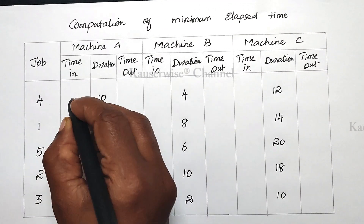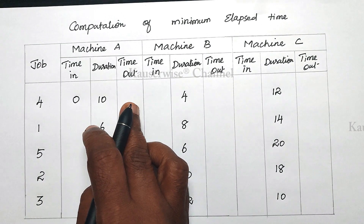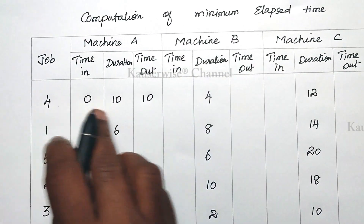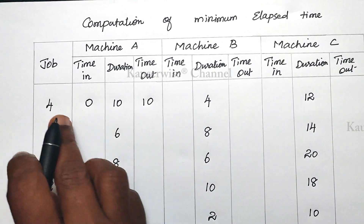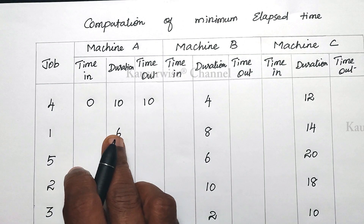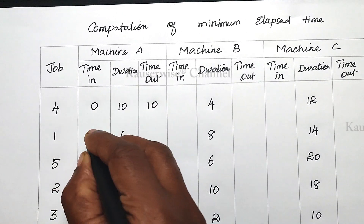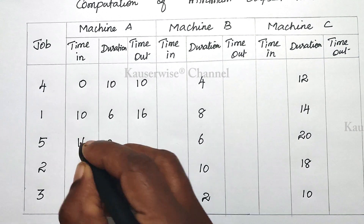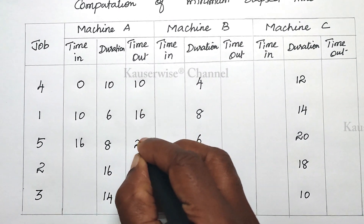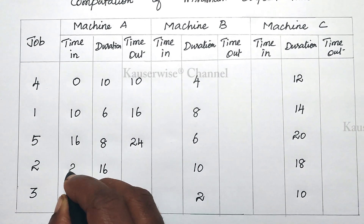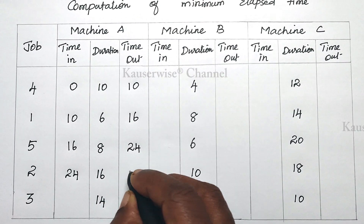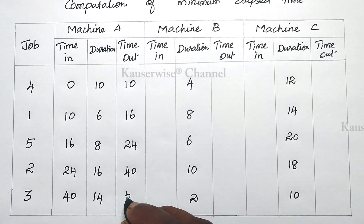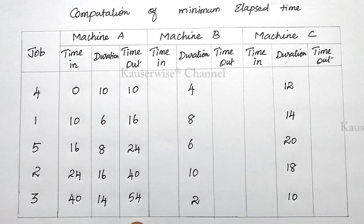For machine A: first job in-time 0, out-time 0+10=10. Next job in-time 10, out-time 10+6=16. Next job in-time 16, out-time 16+8=24. Next in-time 24, out-time 24+16=40. Last job in-time 40, out-time 40+14=54. This is how in-time and out-time are entered for machine A.